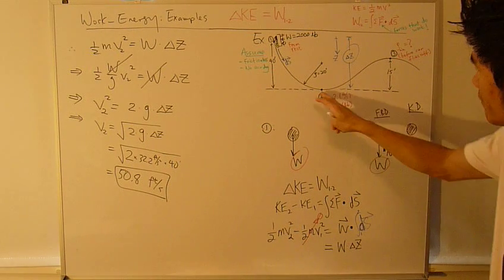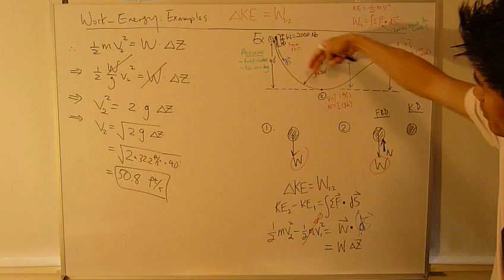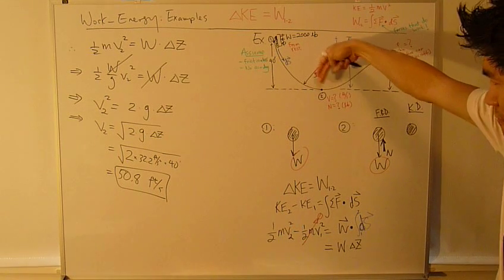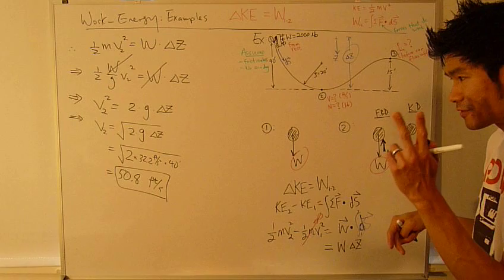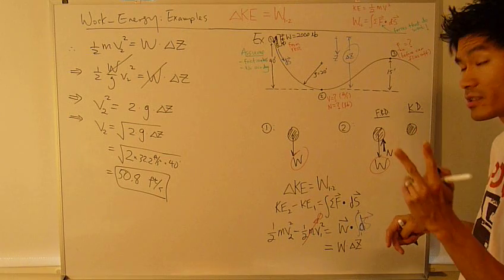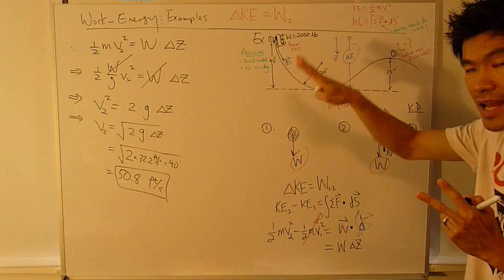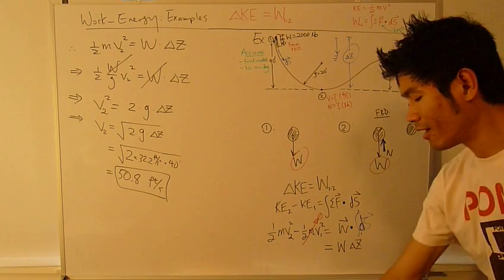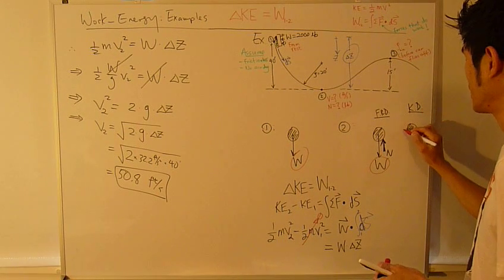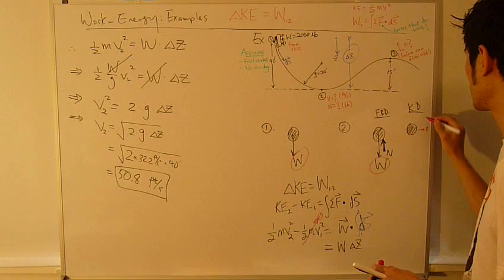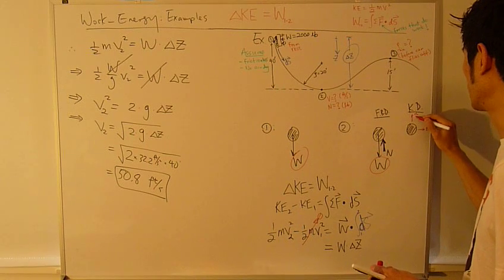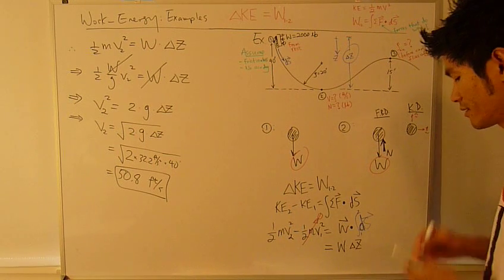At this position, since this particle is along a curve, I have two components of acceleration using the tangent-normal coordinate system. I'm going to use tangent and normal coordinate.